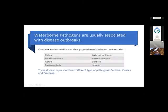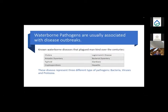Waterborne pathogens are usually associated with disease outbreaks. Some of the known waterborne diseases that have plagued mankind over the centuries include cholera, amoebic dysentery, typhoid, cryptosporidiosis, Legionnaires' disease, bacterial dysentery, giardiasis, and hepatitis. These diseases represent three different types of pathogens we need to disinfect our water supply from: bacteria, viruses, and protozoa.